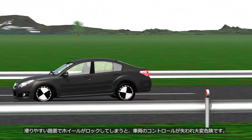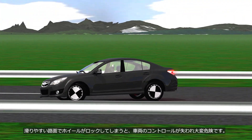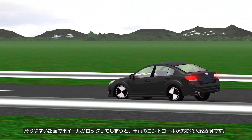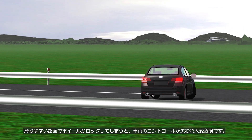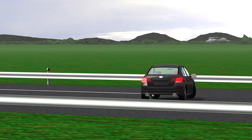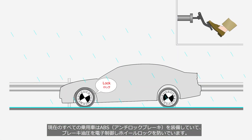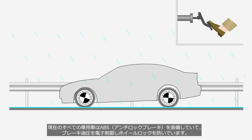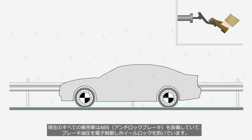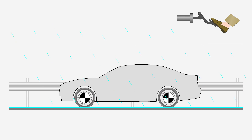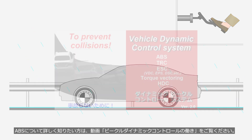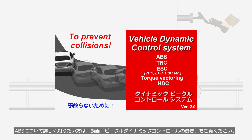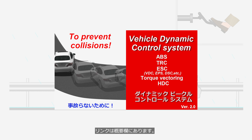When wheels lock on slippery surfaces, drivers lose control of the vehicle, posing a significant danger. All current passenger vehicles are equipped with ABS anti-lock braking system, which electronically controls brake fluid pressure to prevent wheel lock. If you want to learn more about ABS, please watch the video 'How a Vehicle Dynamic Control Works.' The link is in the description.